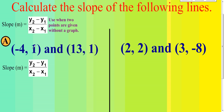When you have just the two points, the first thing to do is label your coordinates. Negative 4 is the first x we read, so that's x1. 1 is the first y, so that's y1. 13 is the second x — remember x is always listed first in coordinates — and 1 is the second y, so that's y2.